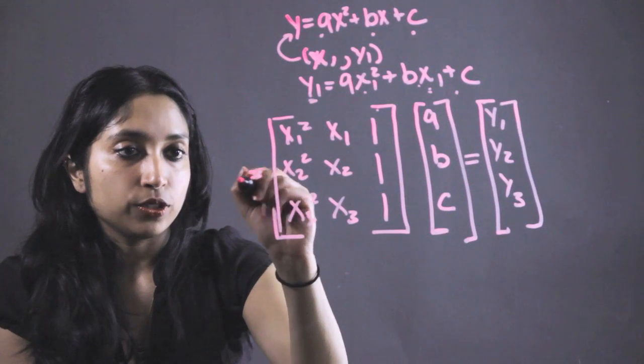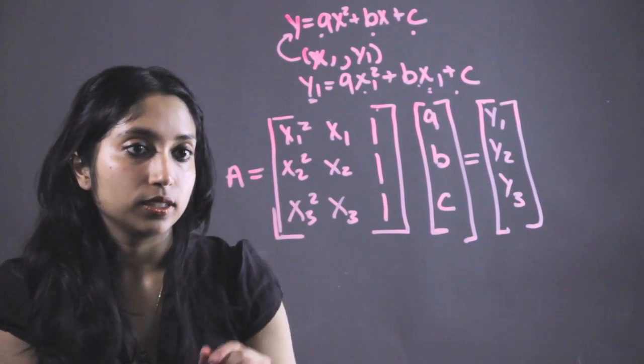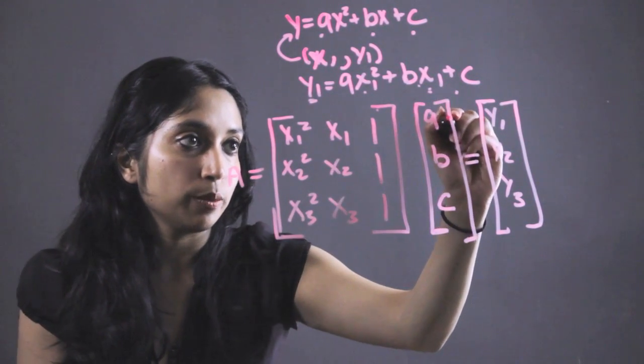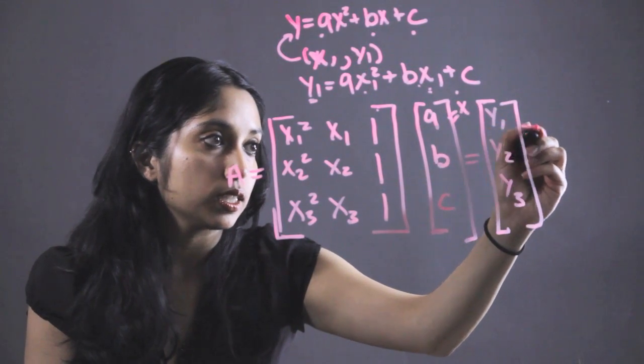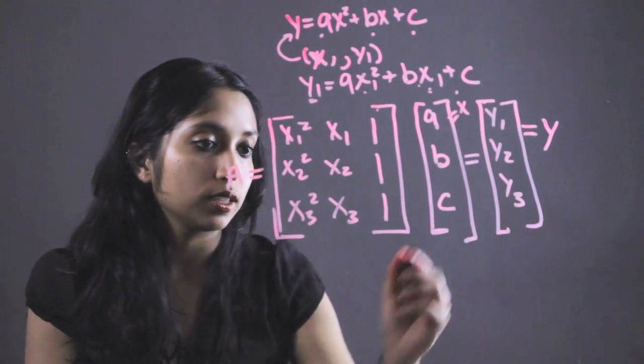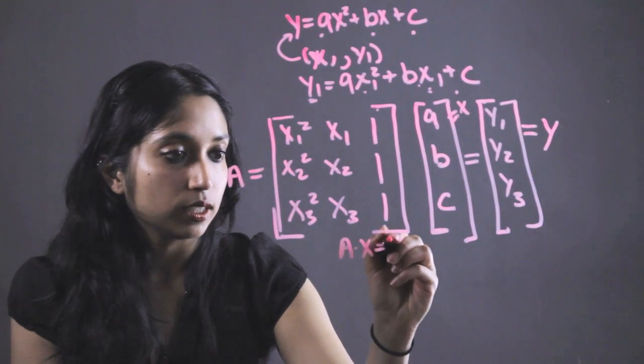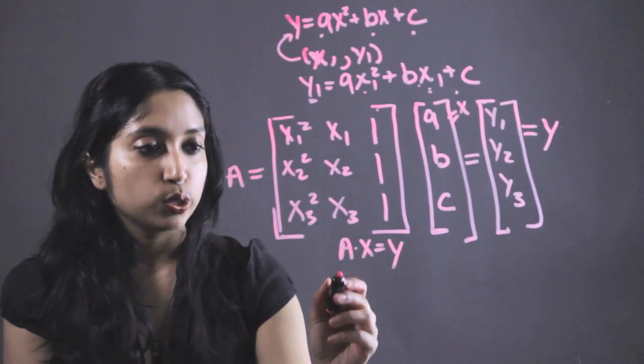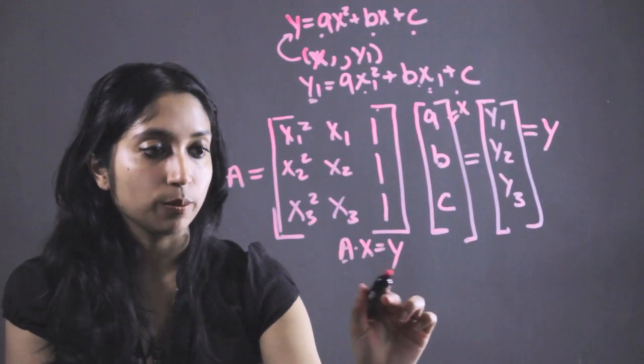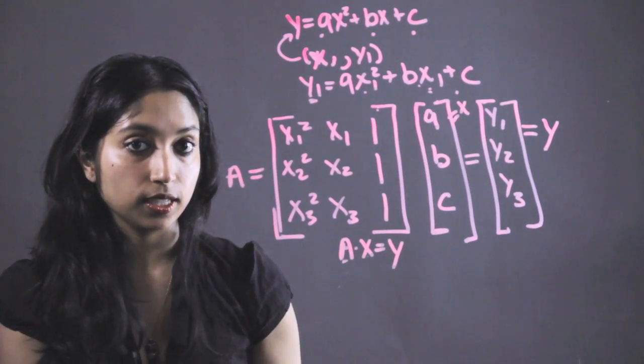So let's let this matrix equal matrix A. This is going to be our matrix called X. And this is going to be our matrix called Y. So right now we have A times X equals Y. So we want to get rid of this so we have X equals something, because we're trying to solve for these guys in here.